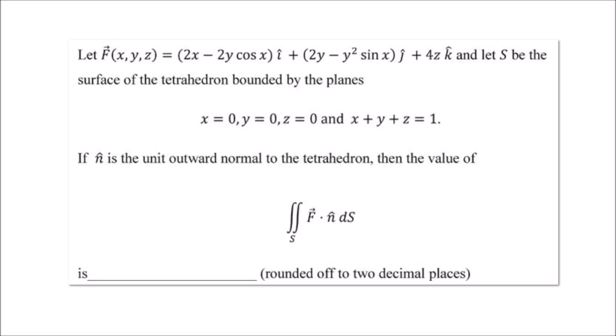Here a vector field is given to you and a surface of a tetrahedron which is bounded by four planes: the xy plane, yz plane, zx plane, and the plane x plus y plus z equal to 1. You have to find the value of the surface integral of the vector field over the surface S. So this is a problem on surface integral.